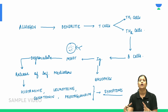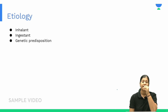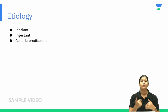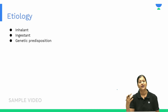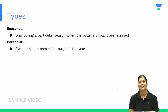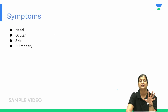Allergy can be present throughout the year — called perennial allergy — or only during a particular season, called seasonal allergy. It can be caused by inhalant exposure, ingested allergens, or a genetic predisposition, all of which can predispose to allergic rhinitis.